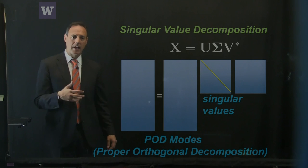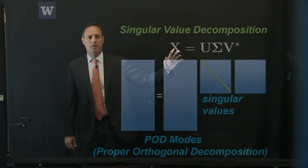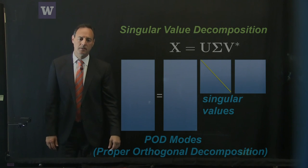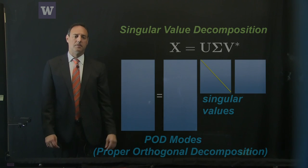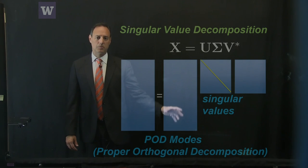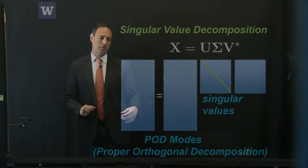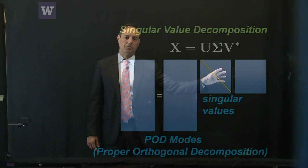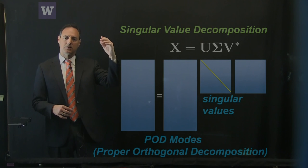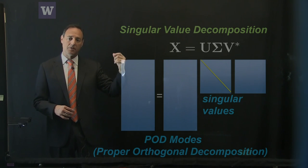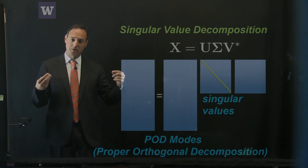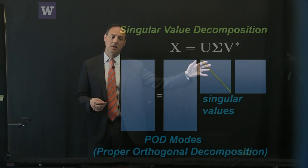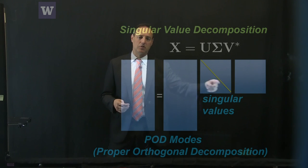The standard way to find low-rank structure is with the singular value decomposition. We decompose the data matrix into singular value components U, sigma, and V-star. The U matrix contains the modal structures that dominate the dynamics in orthogonal columns. The sigma matrix is diagonal, giving a score or weighting of each U vector from largest to smallest. This tells you where to truncate, and V gives the time dynamics associated with these modes.